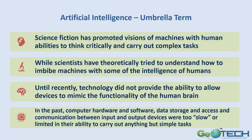Artificial intelligence is really an umbrella term for the other terms. Science fiction has promoted the vision of machines with human abilities — robots that look like humans, act like humans, and can think and work on complex tasks. While scientists have theoretically tried to understand how humans think and mimic that intelligence in machines, until recently the technology just did not provide the ability to allow these devices to do this.